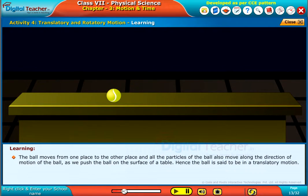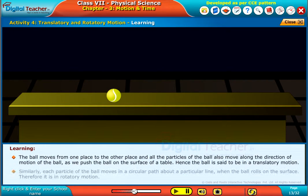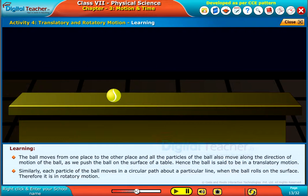The direction of motion of the ball as we push the ball on the surface of a table - hence the ball is said to be in a translatory motion. Similarly, each particle of the ball moves in a circular path.